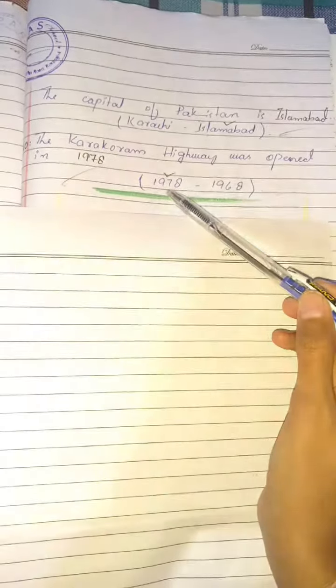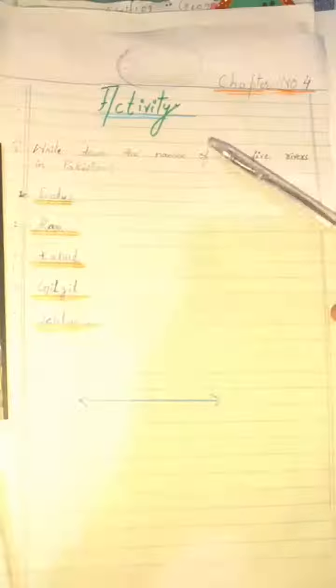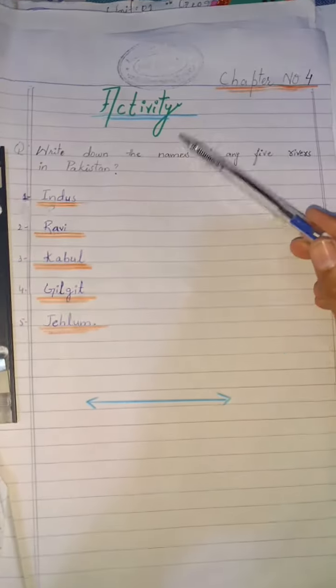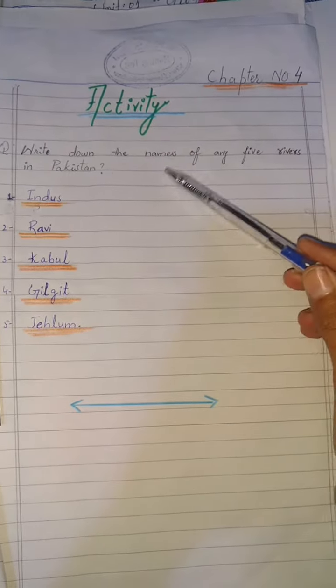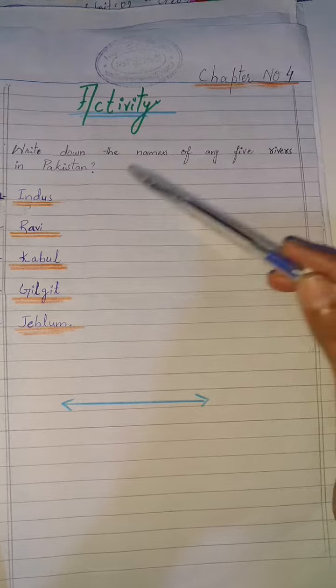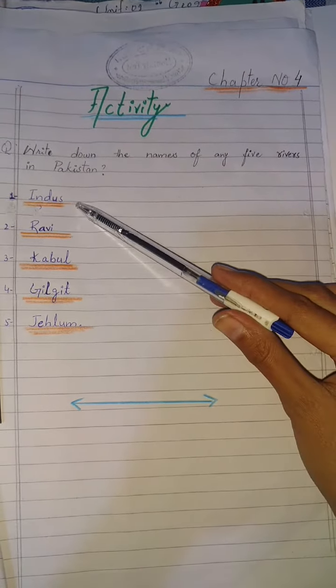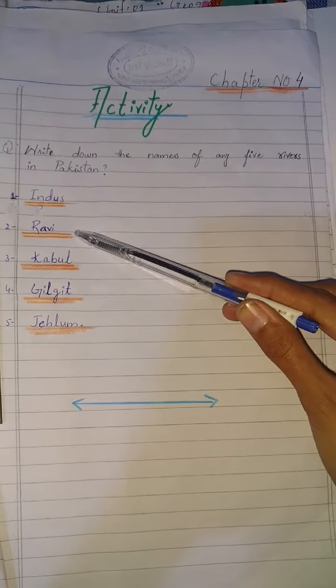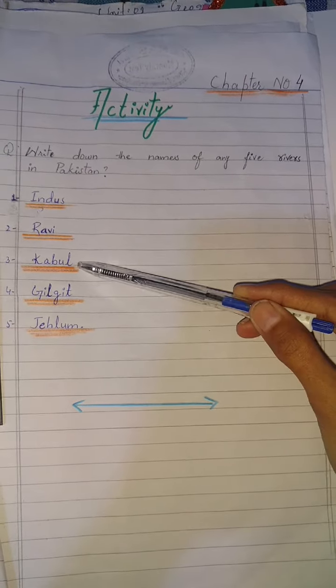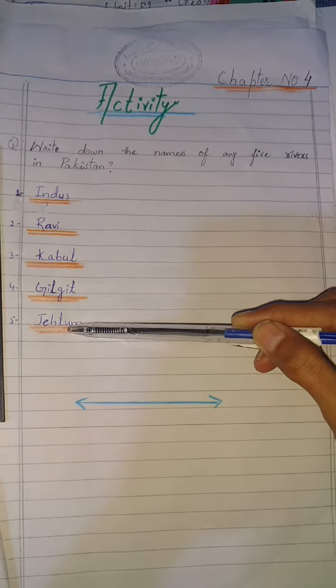Now we are going to write the activity of this chapter. Activity, chapter number 4: Write down the names of any 5 rivers in Pakistan. Number 1: Indus. Number 2: Ravi. Number 3: Kabul. Number 4: Gilgit. Number 5: Jhelum.